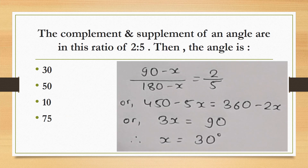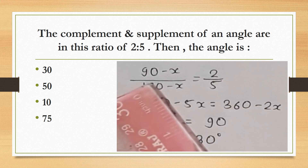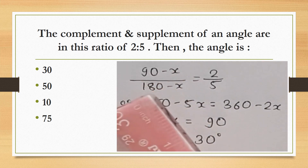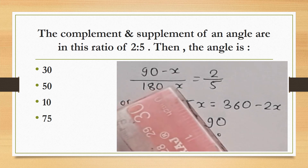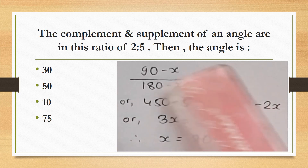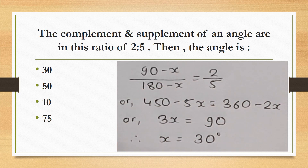The complement and supplement of an angle are in the ratio 2:5. Find the angle. The complement is (90 minus x) and the supplement is (180 minus x). According to the question, (90 minus x) upon (180 minus x) equals 2 by 5. Solving this, the value of x is 30 degrees.